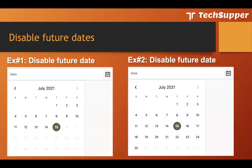The second example is you only want users to select a future date within a range — today's date plus 10, 30, or 90 more days. Sometimes there is a requirement that you don't want your users to select a date more than 90 or 30 days ahead. For instance, today is the 15th and the user can only select up to 10 days from the current date.